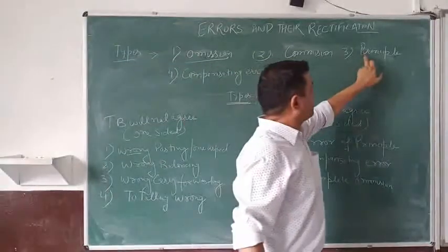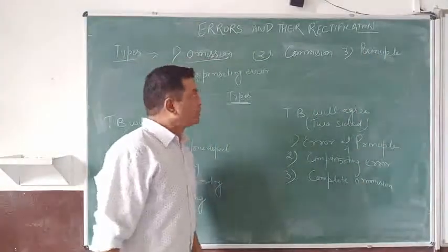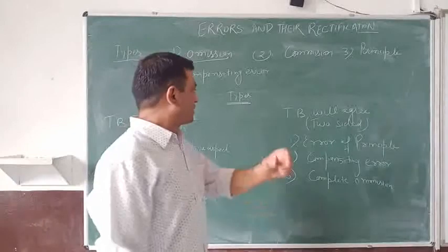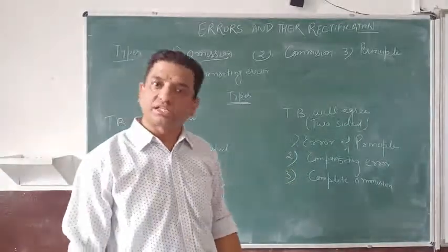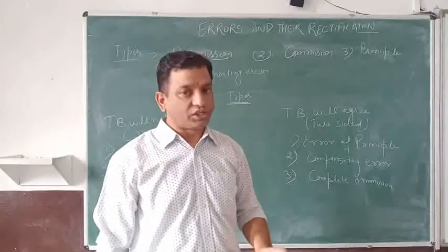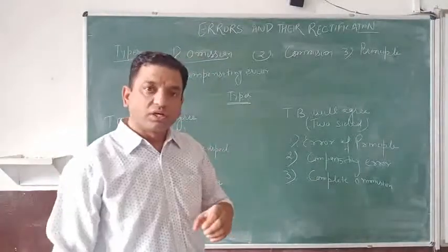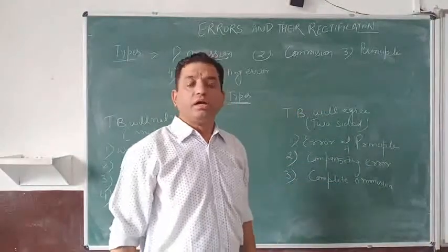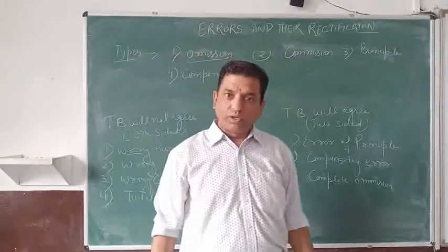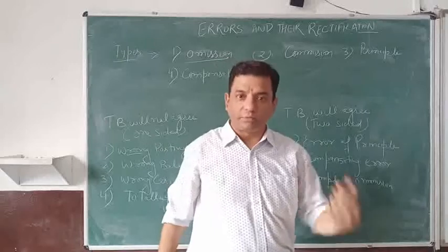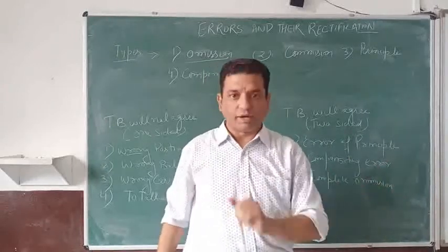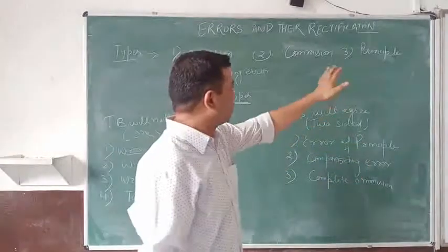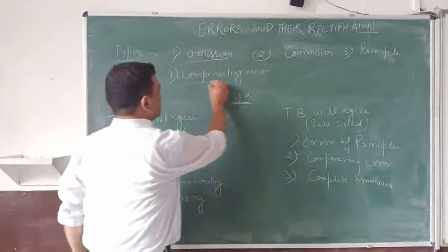Then there is error of principle. The error of principle is that error when you record something by ignoring the accounting principles. For example, if we are purchasing an asset, we should debit the asset account, not the purchase account, because the purchase account is used for goods. Similarly, if you are making a repair to your asset, you should debit the repair account. Sometimes revenue expenditure is treated as capital expenditure — this is called an error of principle.